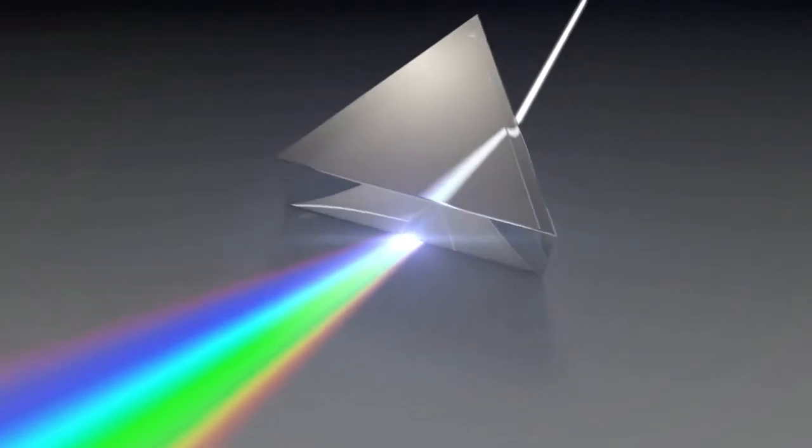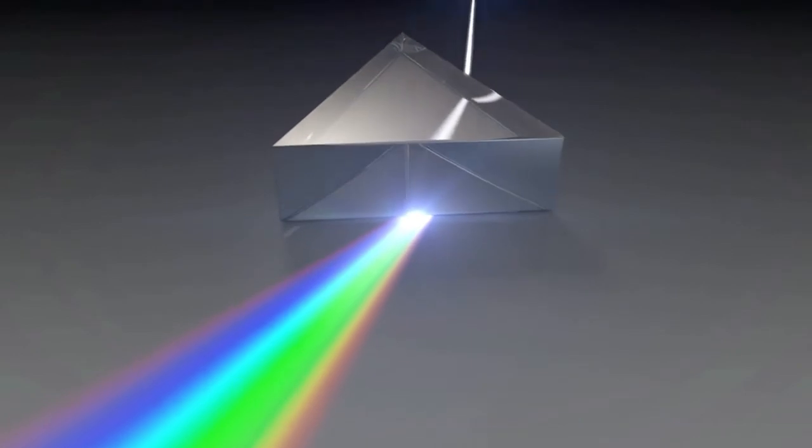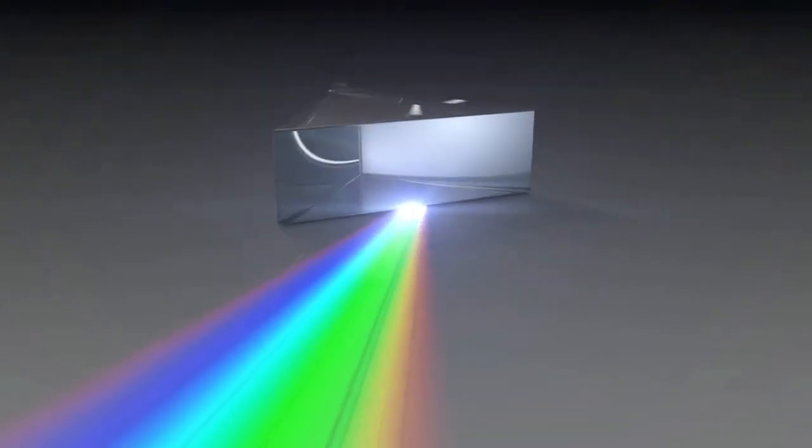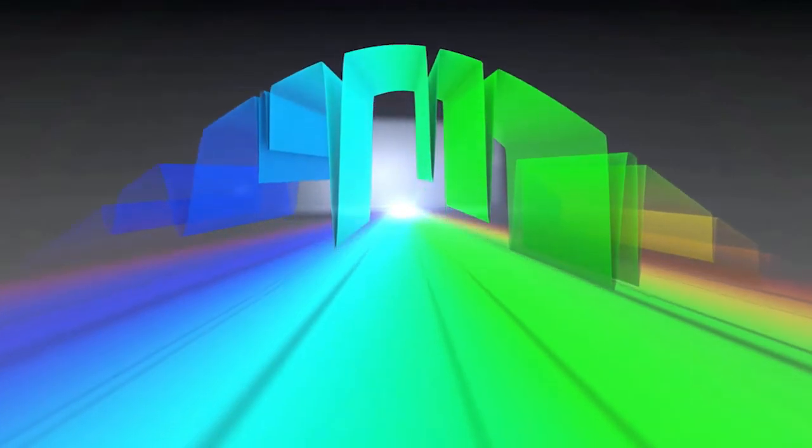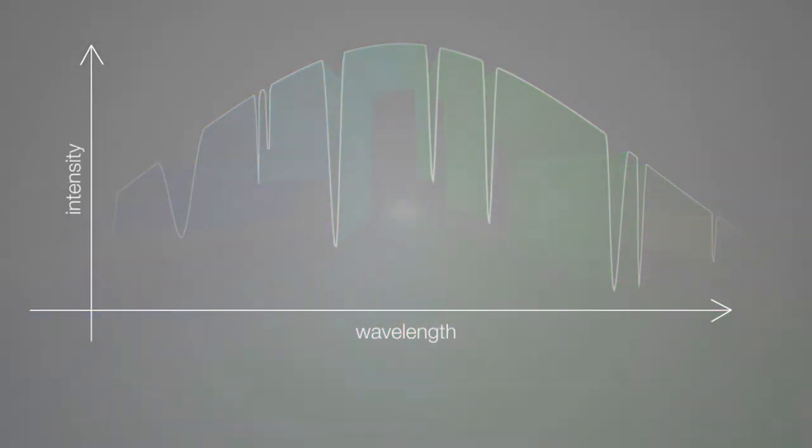Any object that absorbs or emits light can be studied with a spectrograph to determine characteristics such as its temperature, density, chemical composition, and velocity.